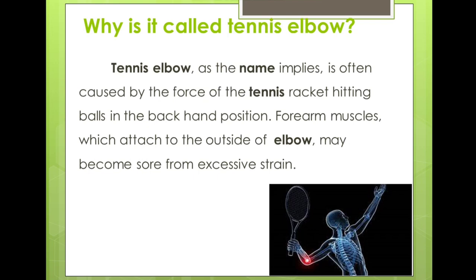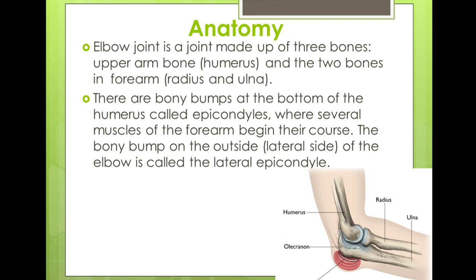Forearm muscles which attach to the outside of the elbow may become sore from excessive strain. Before going to the disease condition, we have to see the anatomy of the hand. The elbow joint is a joint made up of three bones: the upper arm bone called the humerus, and the two bones in the forearm — radius and ulna.